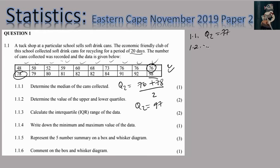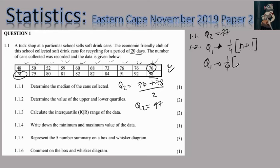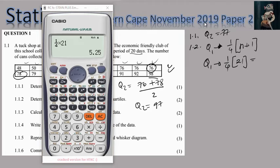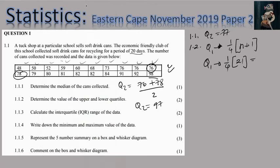Question 1.2 says determine the upper and lower quartiles. We're looking for Q1 and Q3. Q1's position is found using the formula: Q1 = (1/4) × (n + 1). With 20 values, that gives us (1/4) × 21. The calculator gives me 5.25, so Q1 is found at position 5.25.